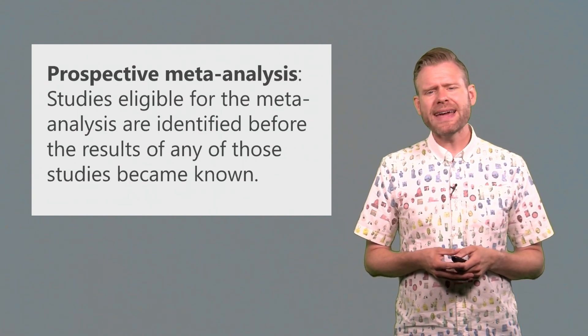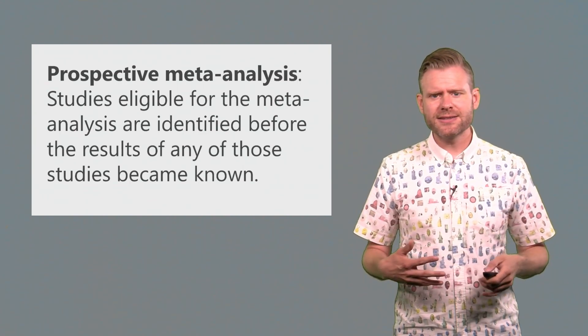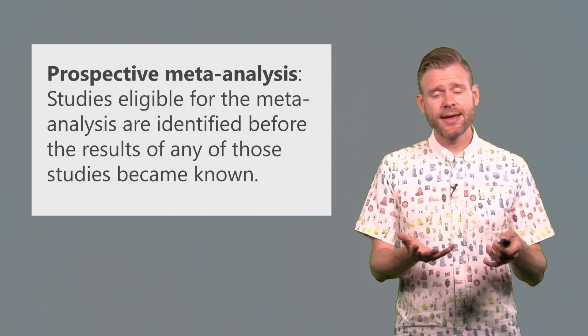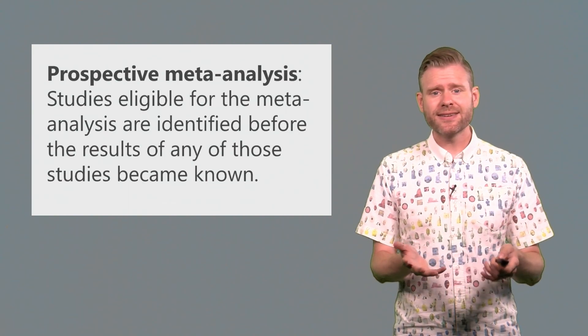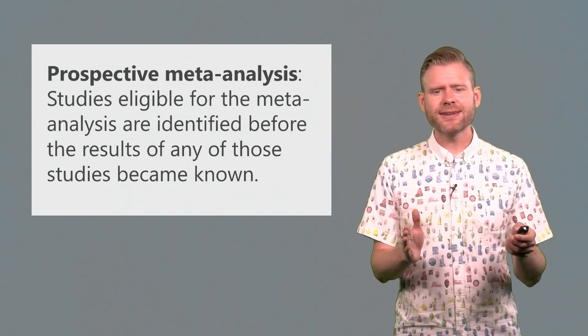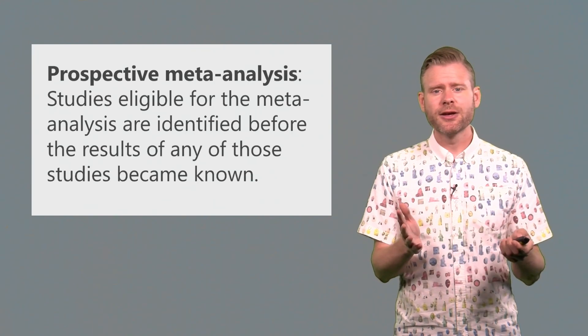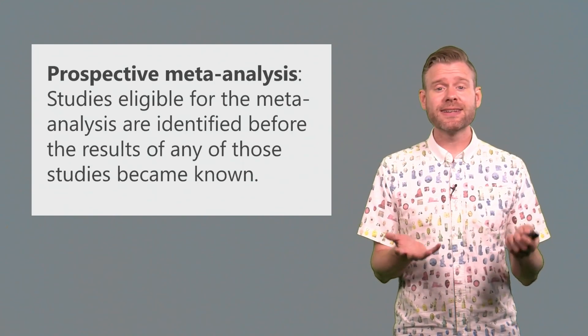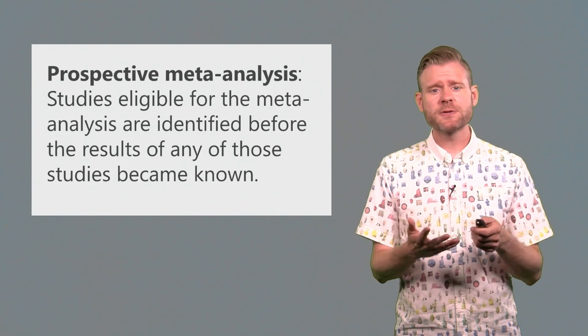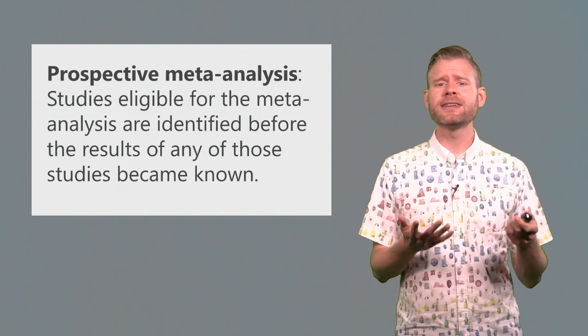So we are performing a meta-analysis based on studies that we know will happen, and the nice thing about this is that if we have identified all these studies, there is no bias. We know the entire set of studies that are being performed. So prospective meta-analysis is maybe an ideal case.